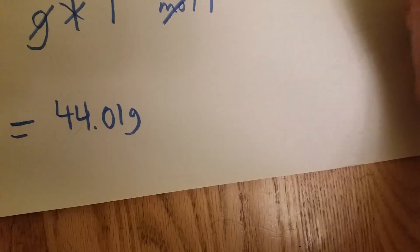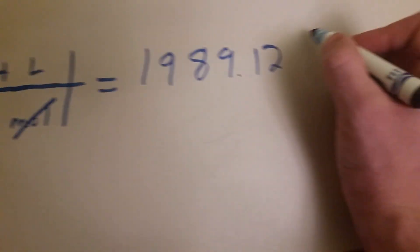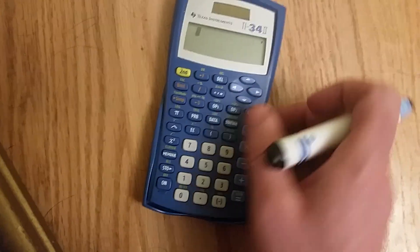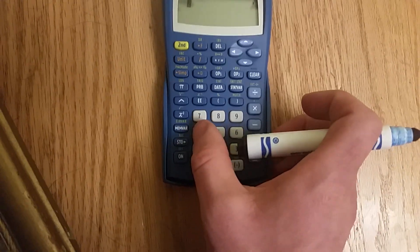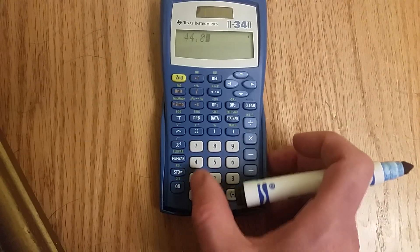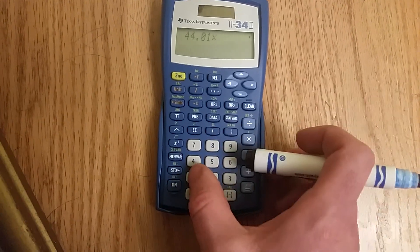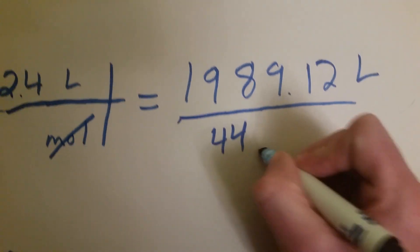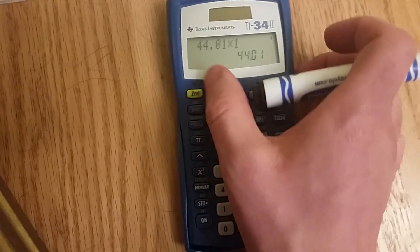We're going to divide that by everything on the bottom. Which is pretty easy, but I'll do it anyway. 44.01 times 1. So, we've got 44.01. Let's divide these two out.